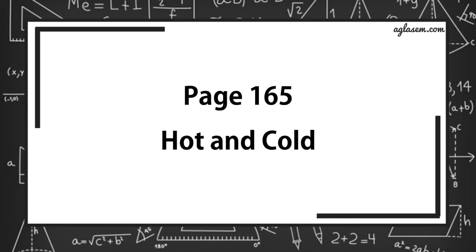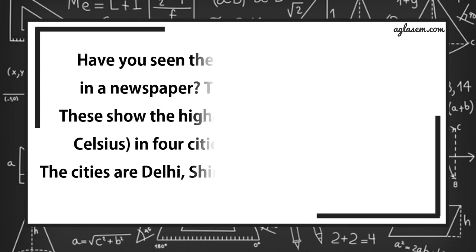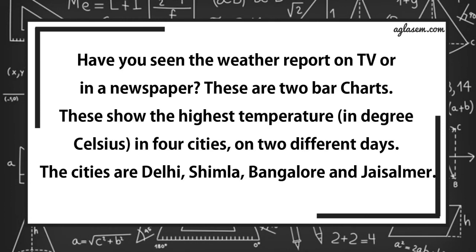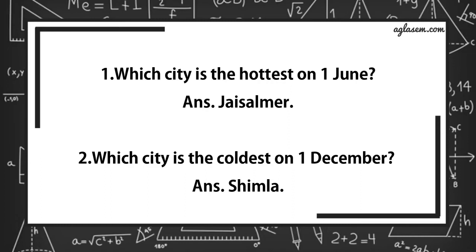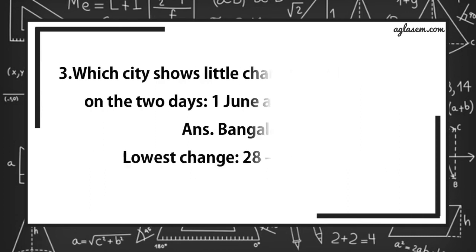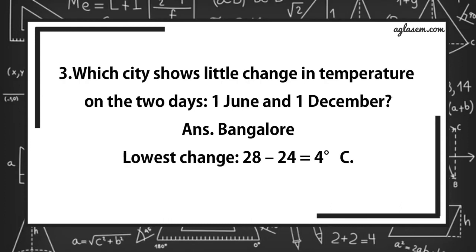Now, turn to page number 165. Hot and cold. Have you ever seen the weather report on TV or in a newspaper? These are two bar charts. These show the different temperatures in Celsius in four different cities on two different days. The cities are Delhi, Shimla, Bangalore and Jaisalmer. Find out from the bar graph. Which city is the hottest on 1st June? Answer is, Jaisalmer. Which city is the coldest on 1st December? Answer is, Shimla. Which city shows little change in temperature on the two days? Answer is, Bangalore. Because lowest change is 28 minus 24, that is 4 degrees Celsius.